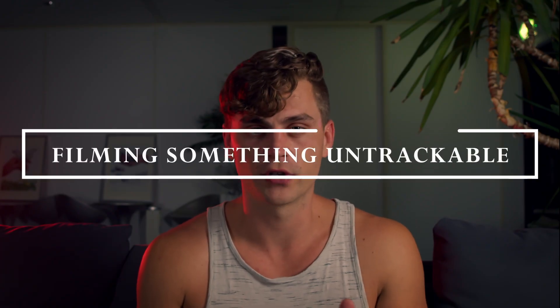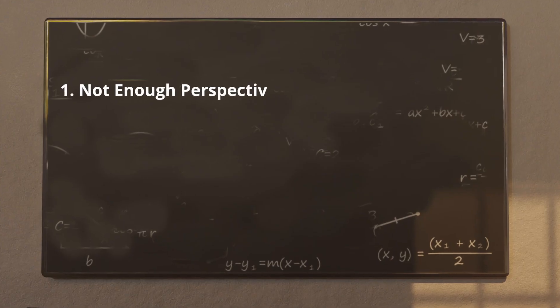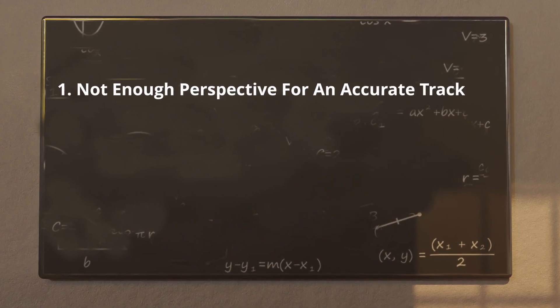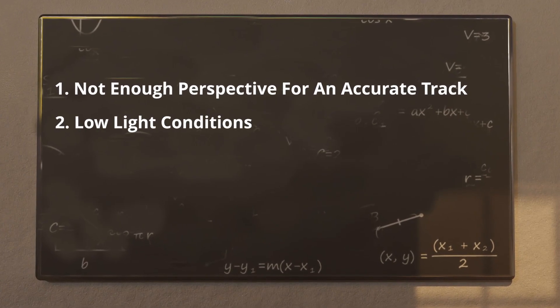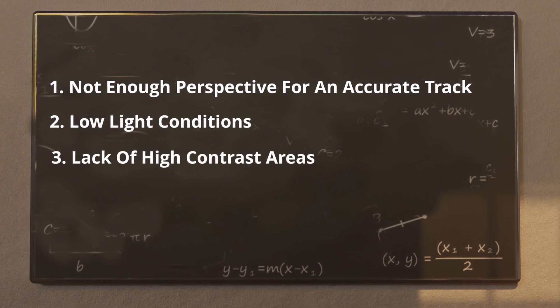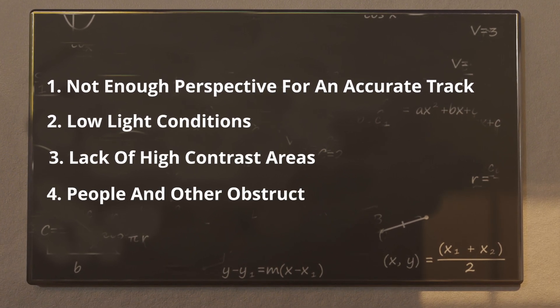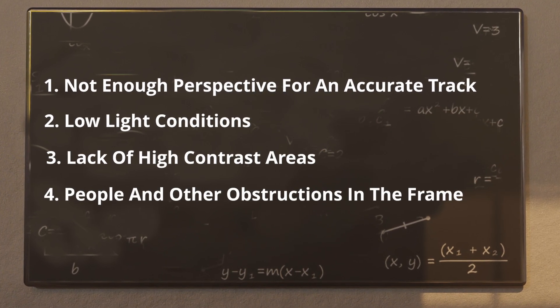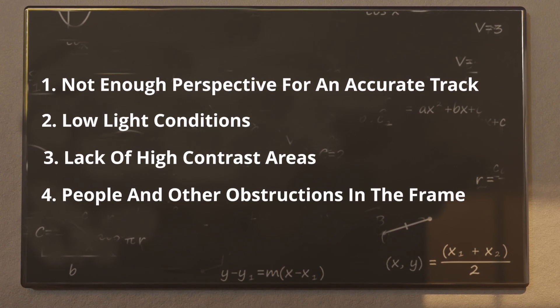Mistake number two: filming something untrackable. There are four types: not enough perspective for an accurate track, low light conditions, lack of high contrast areas, and people walking through the frame or other obstructions.